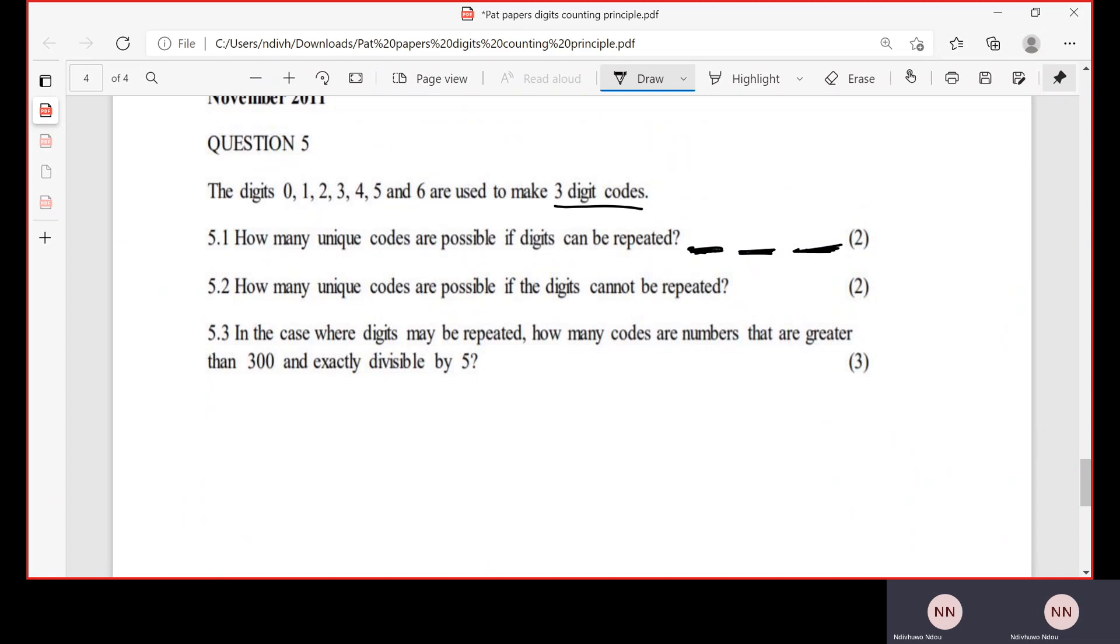So in this position you can either choose 0, you can either put 1, 2, 3, 4, 5, or 6. So you have how many choices? Seven choices. Because there is repetition, it means also in the second position you will have seven choices, and the third position seven choices. Then just multiply those things: 7 to the power of 3. We see 7³ is 343